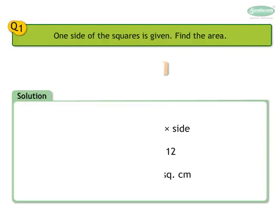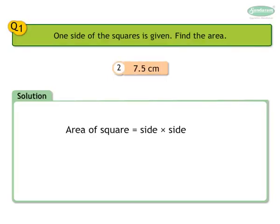Number 2: 7.5 centimeters. Solution: Area of square is equal to side into side, equals 7.5 into 7.5, equals 56.25 square centimeters.